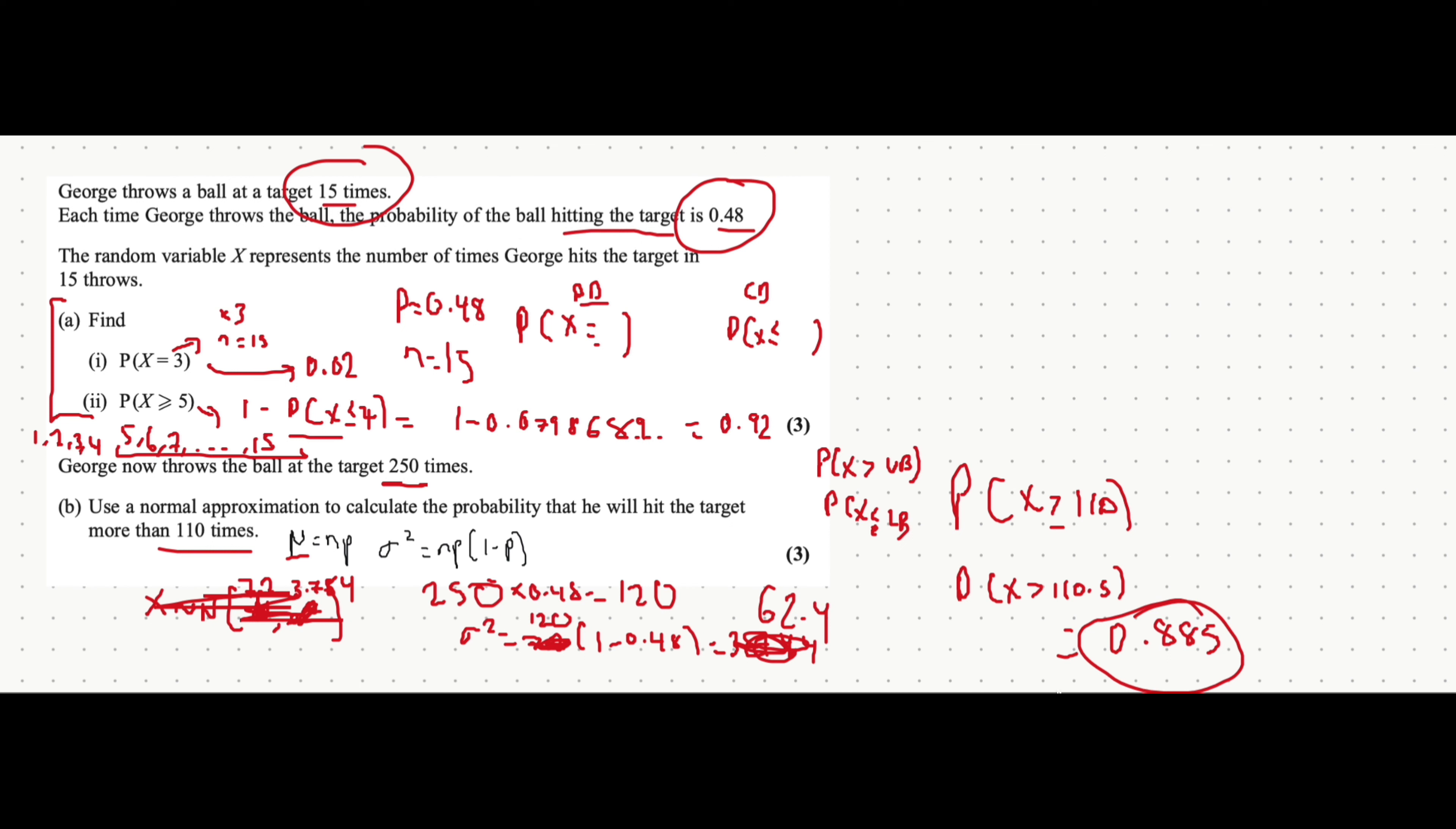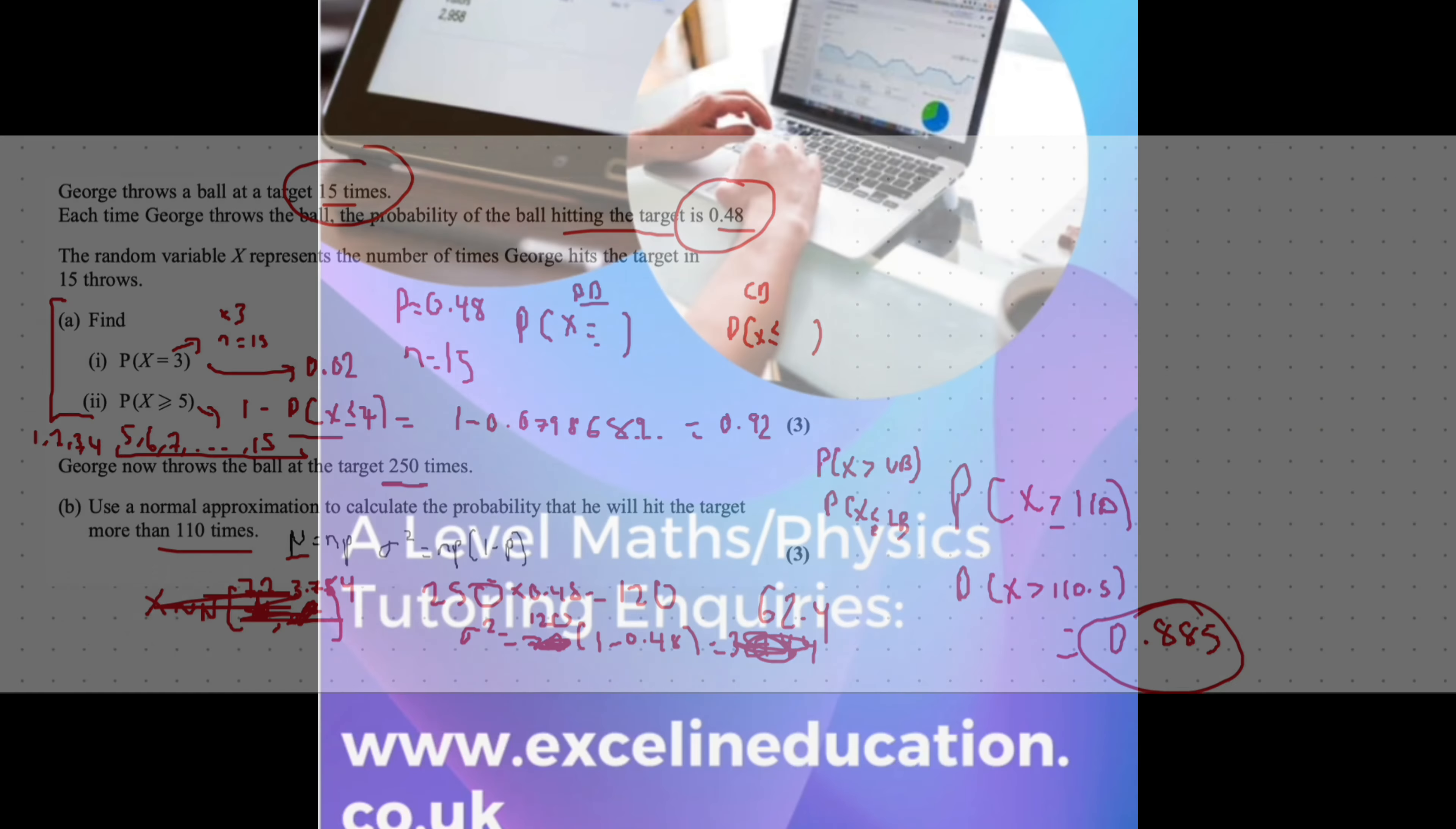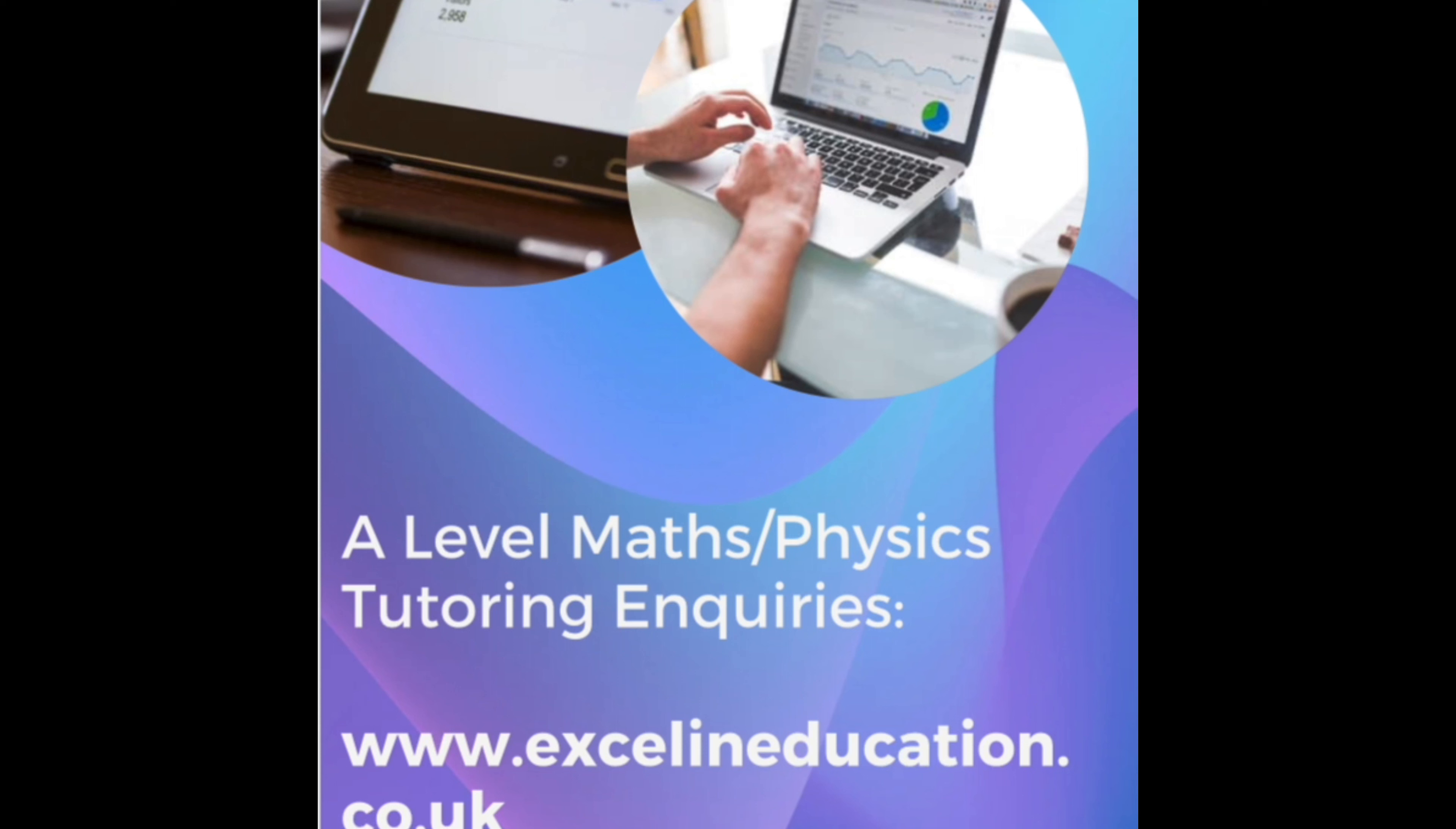Hopefully, that made sense, how you can use the normal distribution function, when you can use it to approximate the binomial distribution, and how you can use it with continuity correction. Thanks for watching the video, guys. Hope it helped. If you have any A-level maths or physics tutoring inquiries, be sure to send me a message at www.excelineducation.co.uk.